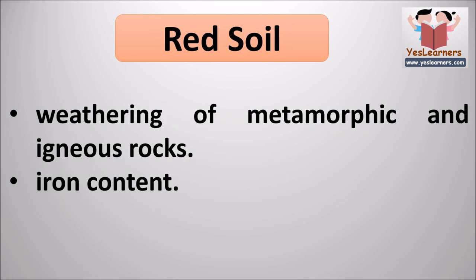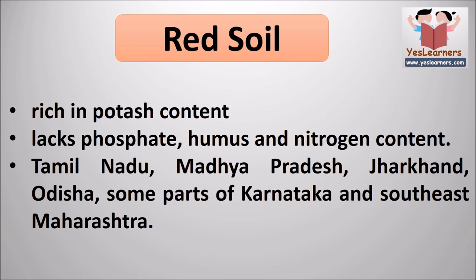Red soil is formed as a result of weathering of metamorphic and igneous rocks. The red color of the soil comes from the high percentage of iron content. It is rich in potash but lacks phosphate, humus and nitrogen content.